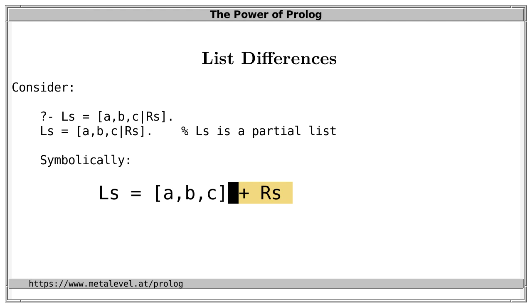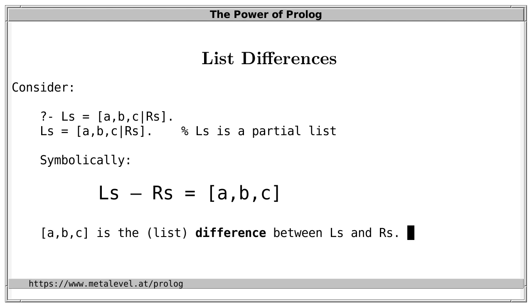Symbolically, we can move RS to the left of the equation if we subtract it from both sides. This brings us to the main topic. We say that ABC is the list difference between LS and RS. We emphasize that we are talking about a difference, hence the name list difference.